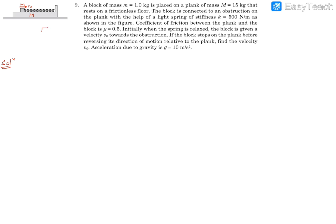When the block stops relative to the plank, both plank and block move with the same velocity. So the combined mass (M + m) moves with velocity v. Using linear momentum conservation in the horizontal direction: mv₀ = (M + m)v, which gives v = mv₀ / (M + m). This is equation 1.